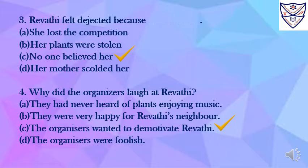Third, Revati felt dejected because: A. She lost the competition. B. Her plants were stolen. C. No one believed her. D. Her mother scolded her. And the answer is C — no one believed her.